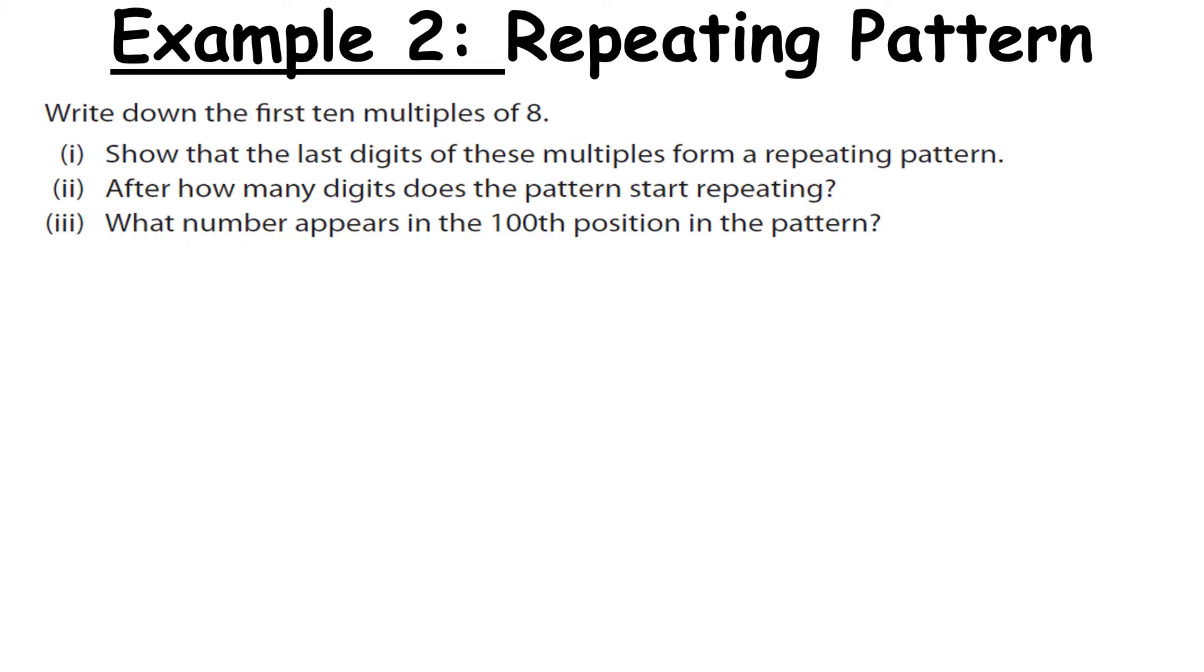Now let's look at another example of a repeating pattern but this time it's going to come from a linear sequence. So write down the first ten multiples of eight. So here they are. Eight, sixteen, twenty four, thirty two, forty, forty eight, fifty six, sixty four, seventy two and eighty. This is a linear sequence because we are adding eight each time.